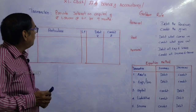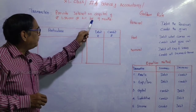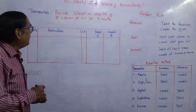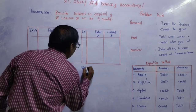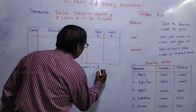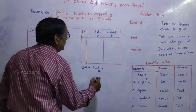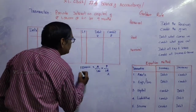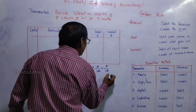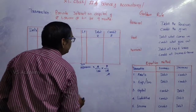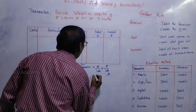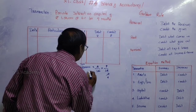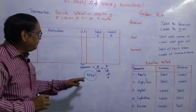Provide interest on capital of ₹1,50,000 at 6% per annum for 9 months. Calculation: 1,50,000 × 6/100 × 9/12 = ₹6,750. So ₹6,750 is the interest on capital.